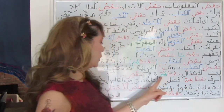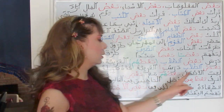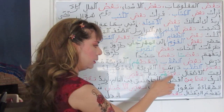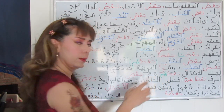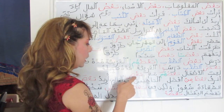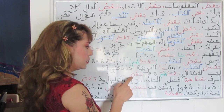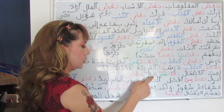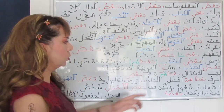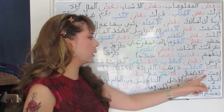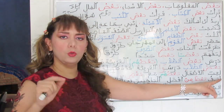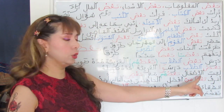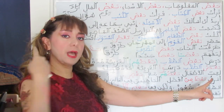La'iba al-atfalu ba'duhum ma'a ba'din — the children played with each other. We have ba'd with the returning pronoun, then ma'a (with), a preposition, and ba'd here is nunated and in the genitive case because of ma'a. La'iba is conjugated in the third person singular masculine because the subject comes after the verb.